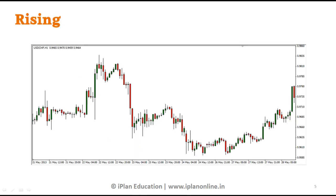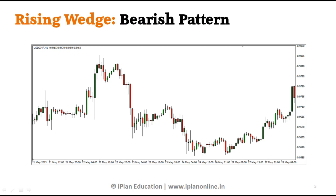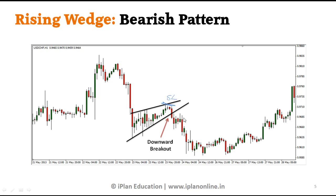Let's take an example of a rising wedge bearish pattern. What we see here are higher lows and higher highs. We connect these and draw two lines, then wait for the breakout. The price went far below. The upper range can be taken as stop loss if you take a short position.